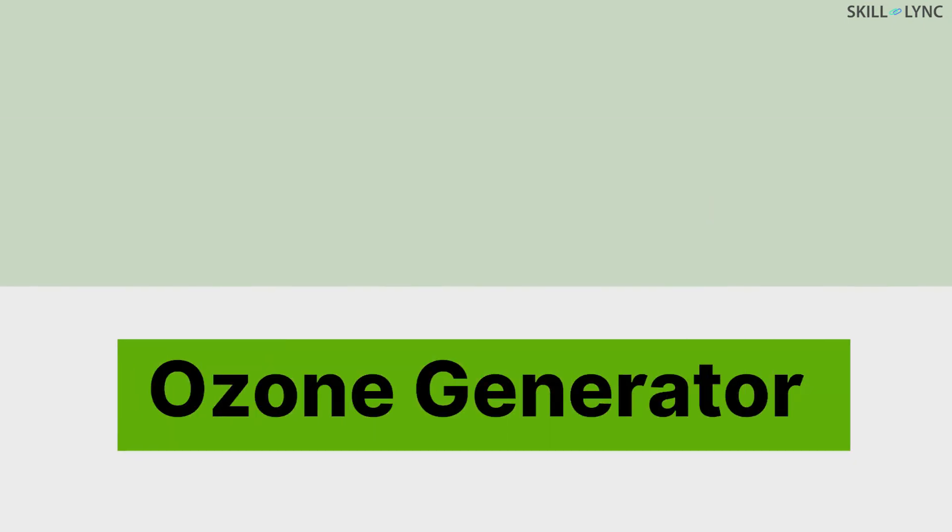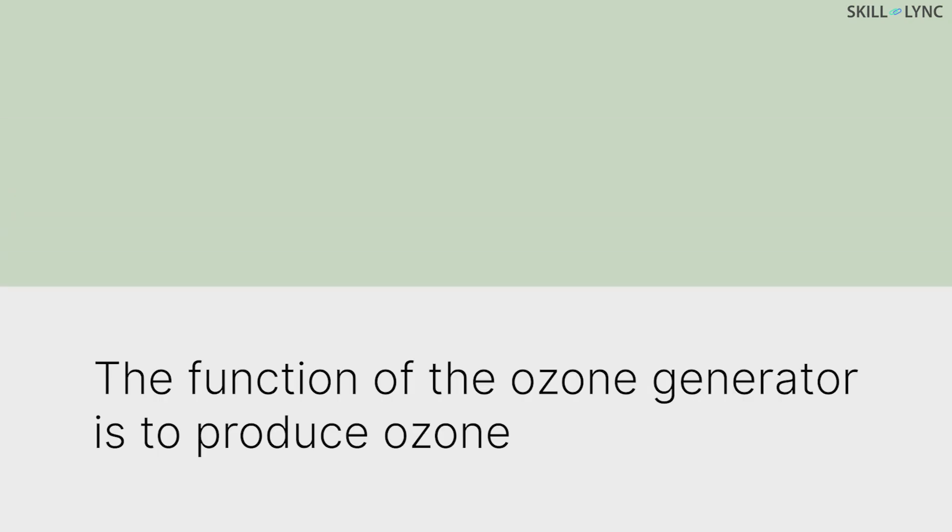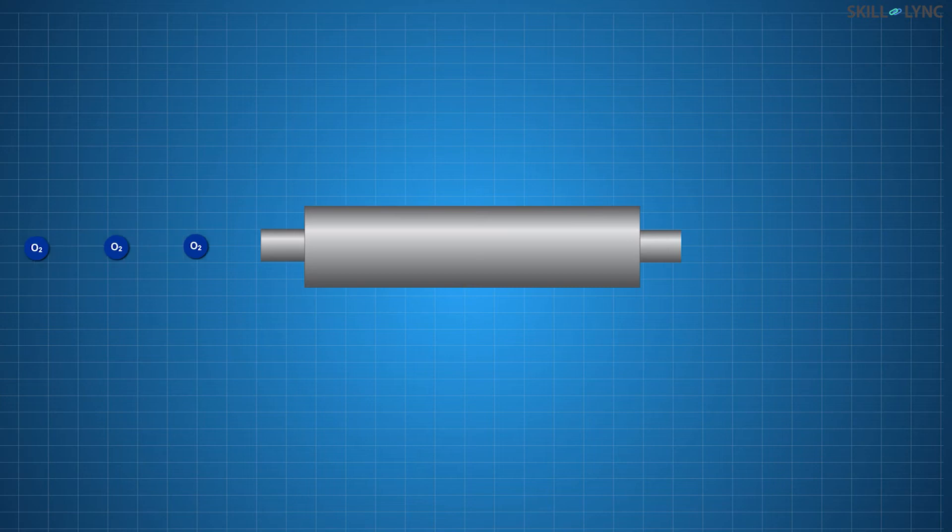Then, there is an ozone generator. The function of the ozone generator is to produce ozone. Oxygen is supplied to the ozone generator and a high electric voltage is supplied to it. The high voltage favors the formation of ozone.